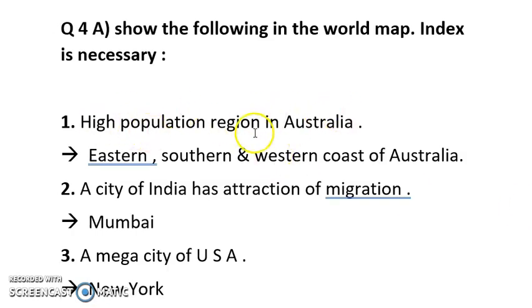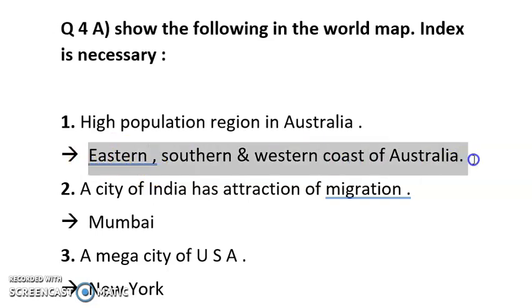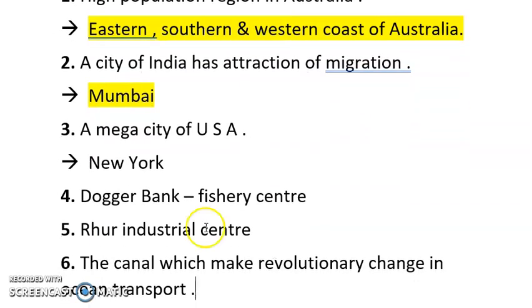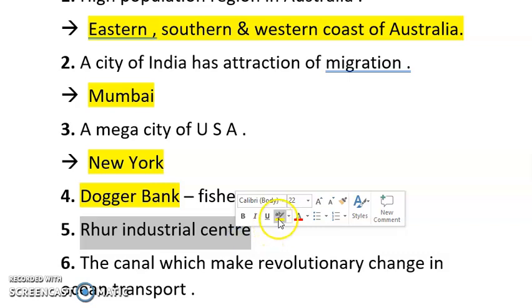Next question: high population region in Australia — you have to write which region has the highest population in Australia. Next, a city in India that has attraction of migration — definitely everyone says Mumbai. Mumbai has everything: politicians, film stars, development, and the highest economy. Next is a mega city of USA — that is New York. Next is Dogger Bank — this is asked very often in map questions and is very important. Next is Ruhr industrial center — this is also very important and has appeared many times in board examinations. Always keep these locations in mind.